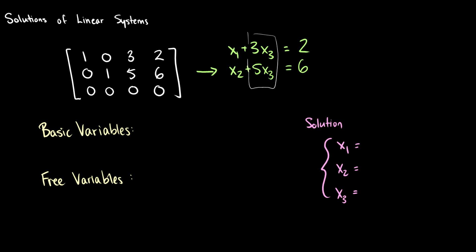So what we can do is we can solve for x1 and x2 in terms of a constant and another variable. So we can say that x1 is equal to 2 minus 3x3, and x2 is equal to 6 minus 5x3.